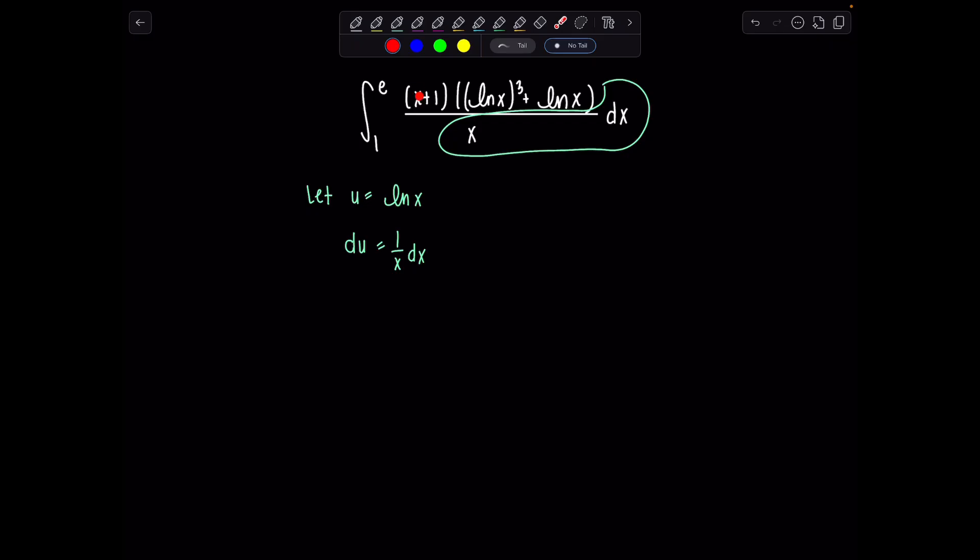Now I have this extra x here, so I'm going to rearrange, solve for x in terms of u. So rewriting this in exponential form, we have e^u is equal to x.